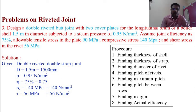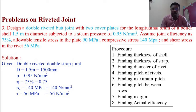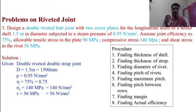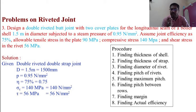Please understand and concentrate on the problems so you can easily find the solutions. The given data: design a double riveted butt joint with two cover plates for the longitudinal seam of a boiler shell 1.5 meter in diameter, subjected to steam pressure of 0.95 N/mm². Assume joint efficiency of 75%, allowable tensile stress 90 MPa, compressive stress 140 MPa, and shear stress in the rivet 56 MPa.